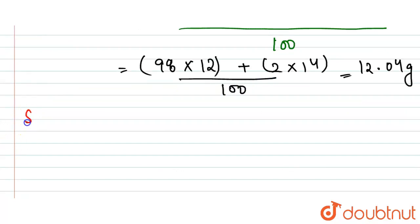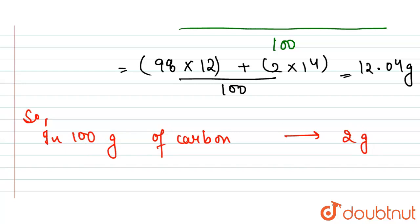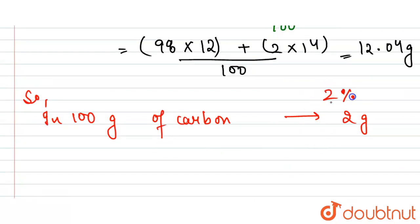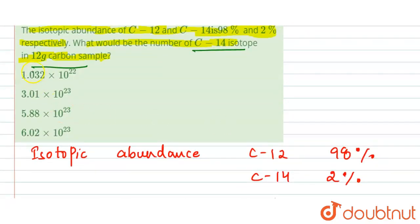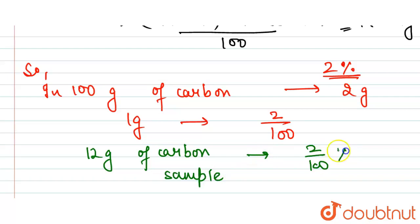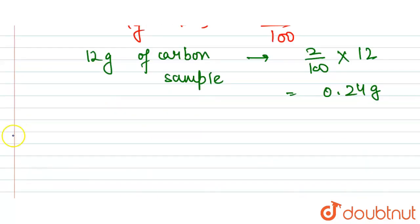We can say that in a 100-gram carbon sample, we have 2 grams of C-14, because its abundance is 2%. So in 1 gram it will be 2/100. Now for the 12-gram sample: the mass of C-14 = (2/100) × 12 = 0.24 grams.